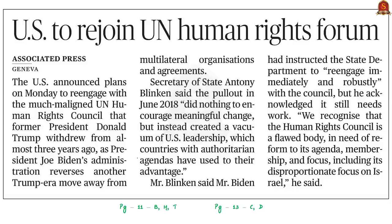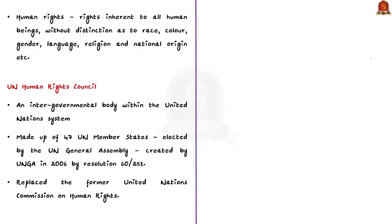This news article states that the USA would rejoin the UN Human Rights Council. Former US President Donald Trump withdrew from this body in 2018, citing chronic bias of this council against Israel. The present administration, after seeing the vacuum being taken to their advantage by some countries, has decided to rejoin. In this context, let us discuss the UN Human Rights Council and also the Office of the High Commissioner for Human Rights.